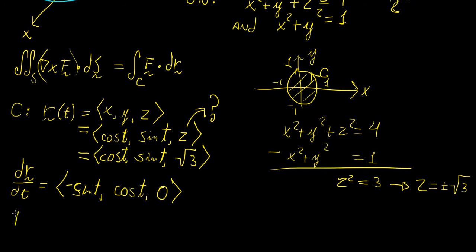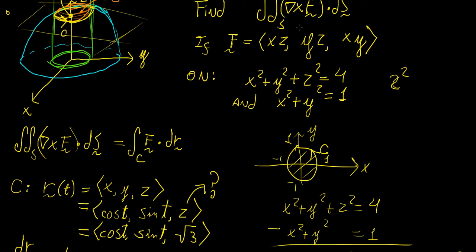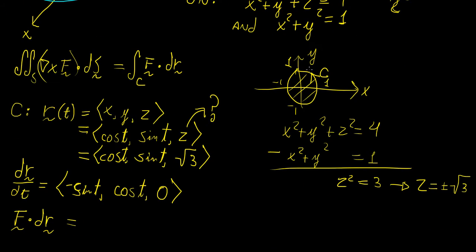And then if we multiply everything by dt, then we have dr. So we have F·dr, we take the dot product of those two functions. Now, obviously, we need to convert this to cylindrical coordinates as well. So let's just do that.